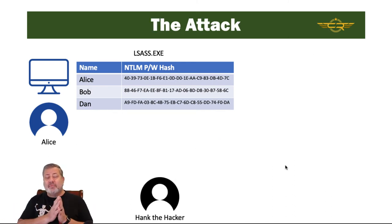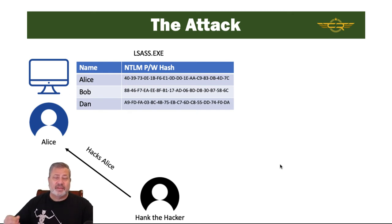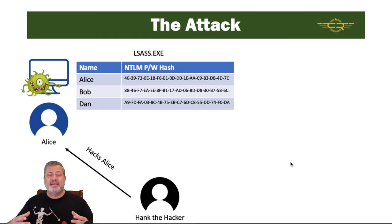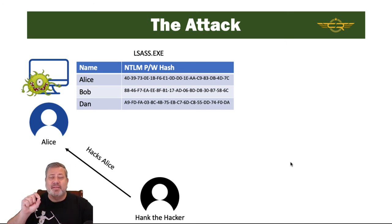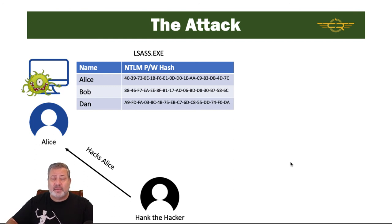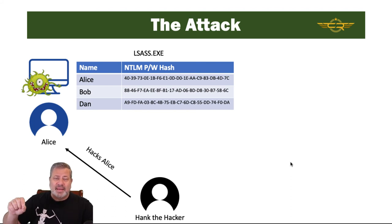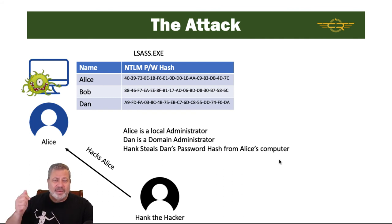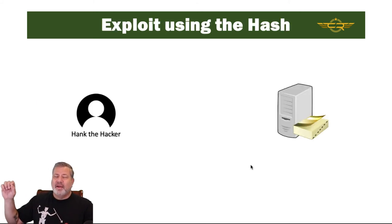In the attack, we can exploit this setup. Hank the hacker hacks Alice's computer — that's the first step. The computer becomes compromised, and Hank is able to get the NTLM hashes from Alice's computer. We don't really want Alice's hash; we want Dan's hash, because Dan is a domain admin and has a whole lot more power. We can't get directly to Dan because he's really secure, but he's had to log on to Alice's computer. On Alice's computer in LSAS is Dan's password hash. Alice is a local admin, Dan is a domain administrator, and Hank is going to steal Dan's domain hash from Alice's computer.